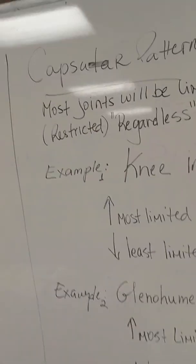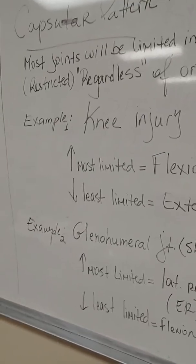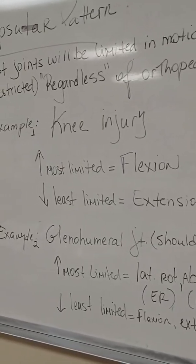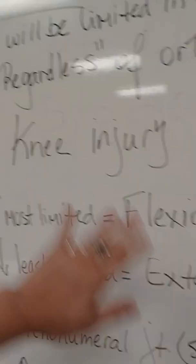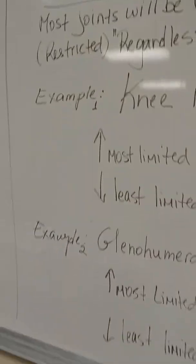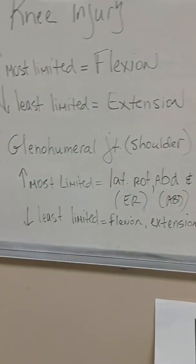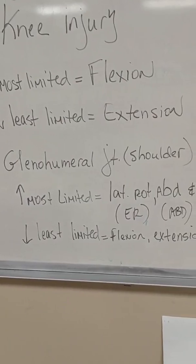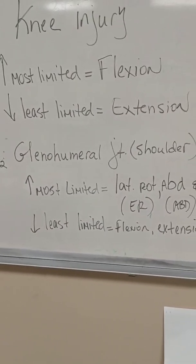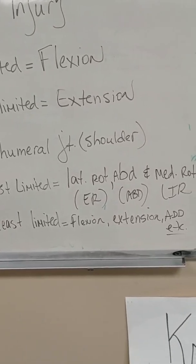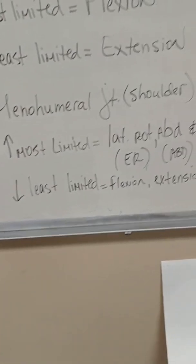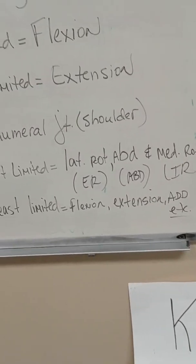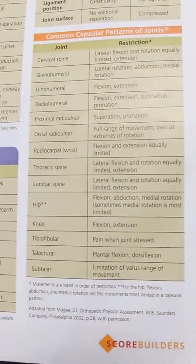This is based on research and science. So if someone has just twisted their knee and you ask them what's harder to do, a great percentage will tell you it's harder to flex than to extend — that is the capsular pattern for the knee. Another example is the glenohumeral joint: if someone injures their shoulder, they'll be most limited in external rotation, abduction, and medial rotation.